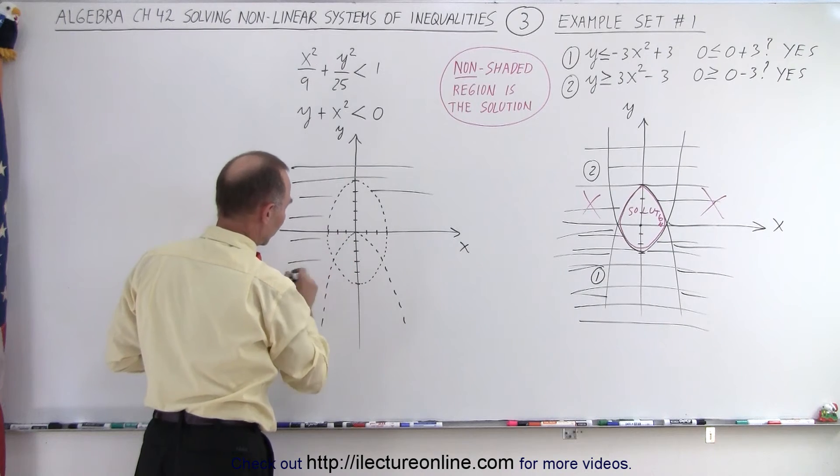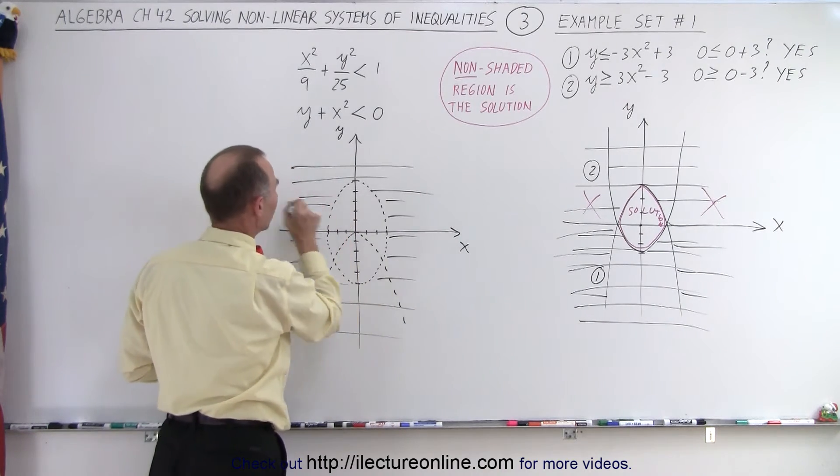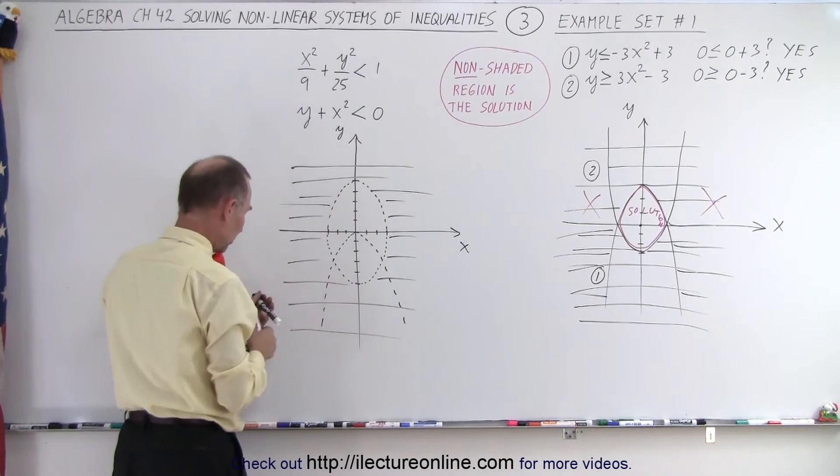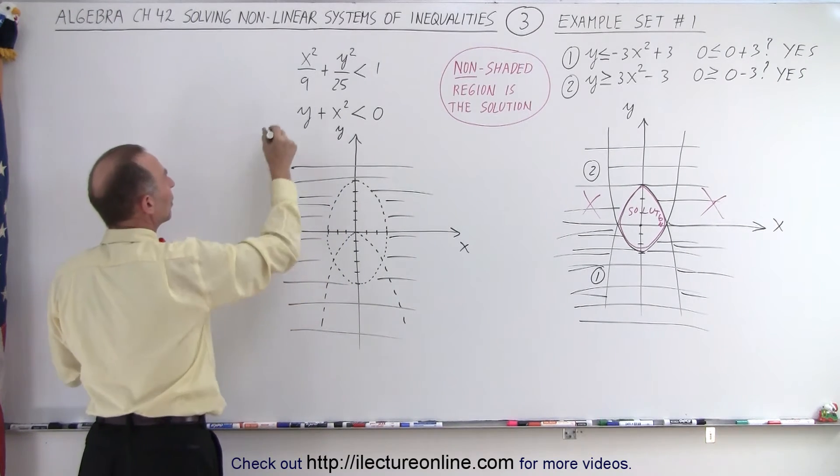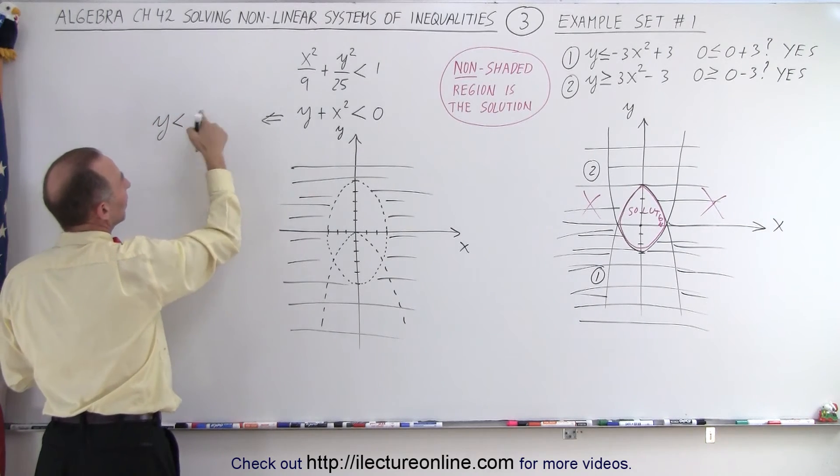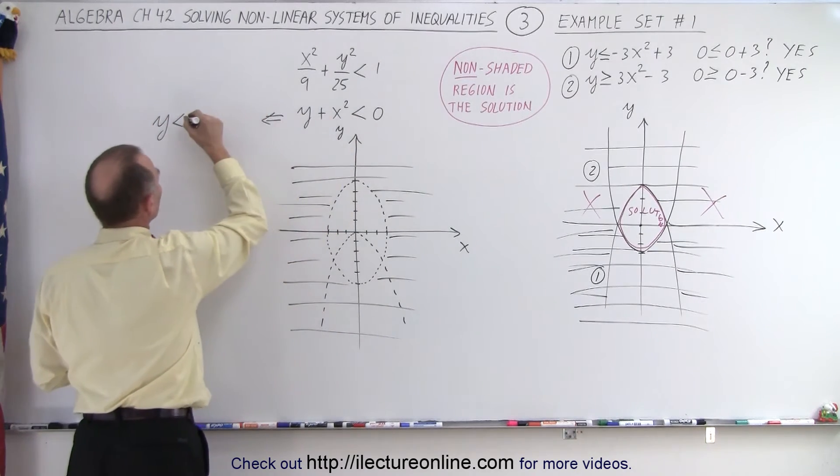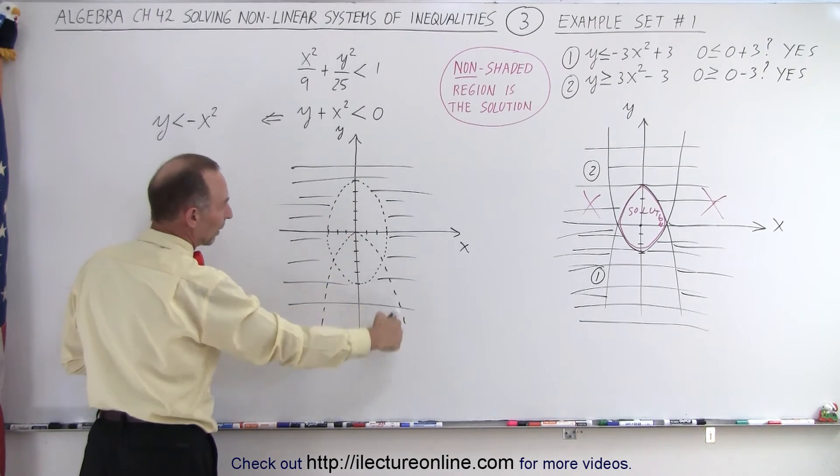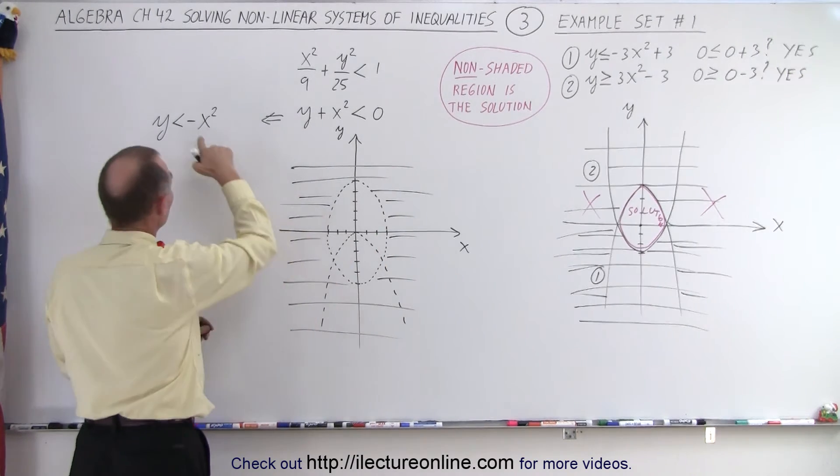Now for the parabola, notice if we rewrite this a little bit, we can rewrite this one as y < -x². Therefore we have the parabola right here which opens downward because we have the negative one.